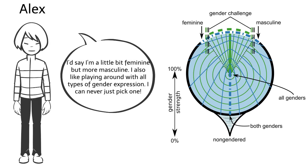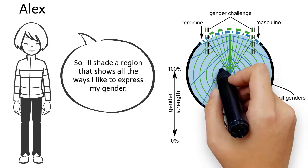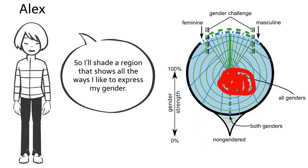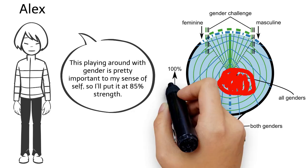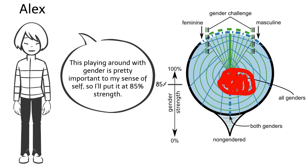I'd say I'm a little bit feminine, but more masculine. I also like playing around with all types of gender expression. I can never just pick one. So I'll shade a region that shows all the ways I like to express my gender. This playing around with gender is pretty important to my sense of self, so I'll put it at 85% strength.